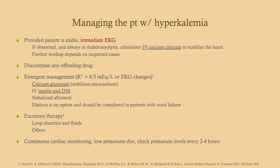To manage these patients: if the patient is stable with hyperkalemia, get an EKG. If the EKG is abnormal or they have rhabdomyolysis, give calcium chloride to stabilize the heart and prevent dysrhythmia. Further workup depends on the suspected cause — for rhabdo, get a creatine kinase. Discontinue any offending drug such as a potassium-sparing diuretic. For emergent management when potassium is greater than 6.5 or there are EKG changes, give calcium gluconate, then insulin and D50. Insulin pulls potassium and glucose into cells, but you must give D50 to prevent hypoglycemia.